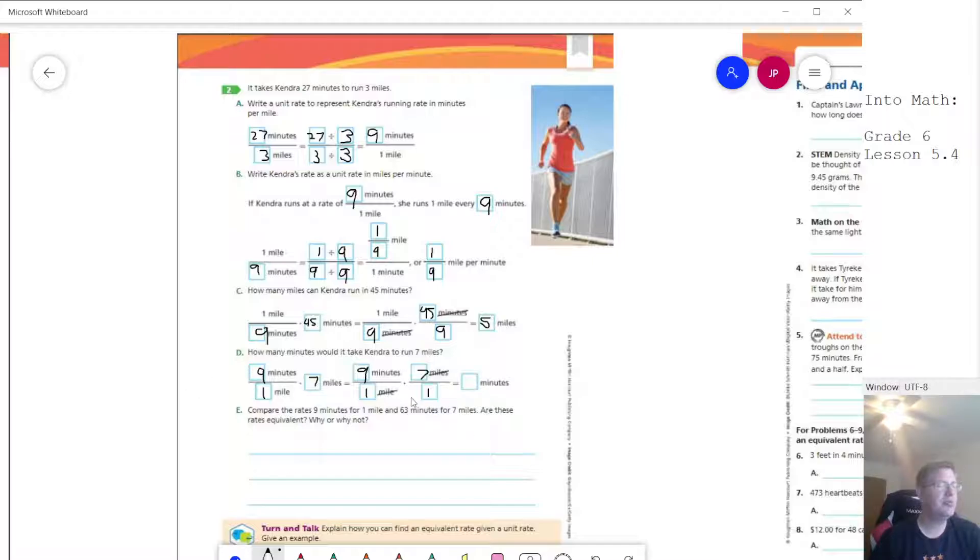And then if we want to find the number of minutes that it would take to get seven miles, we can multiply that. And that would give us 63 minutes, which would be pretty awesome.